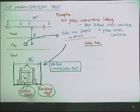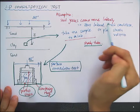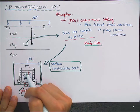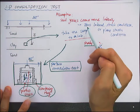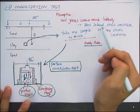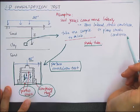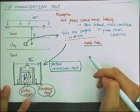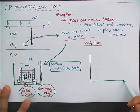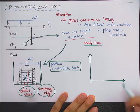In this one-dimensional consolidation test, the assumption is that the soil grains cannot move laterally. So the soil will compress vertically only. This is the zero lateral strain condition, also called the plane strain condition. From this consolidation test, you will obtain this kind of curve.